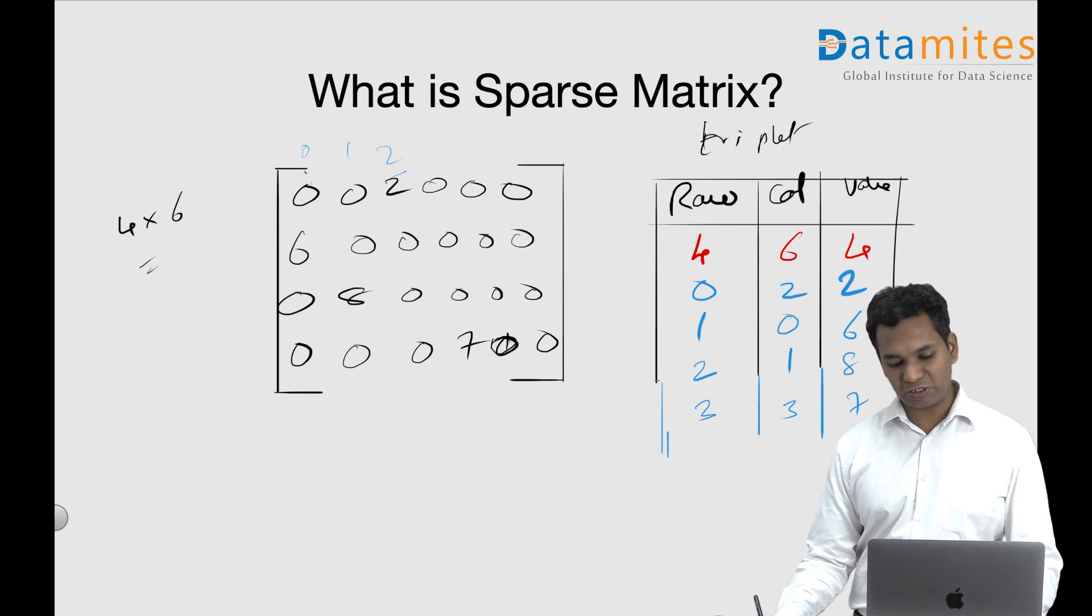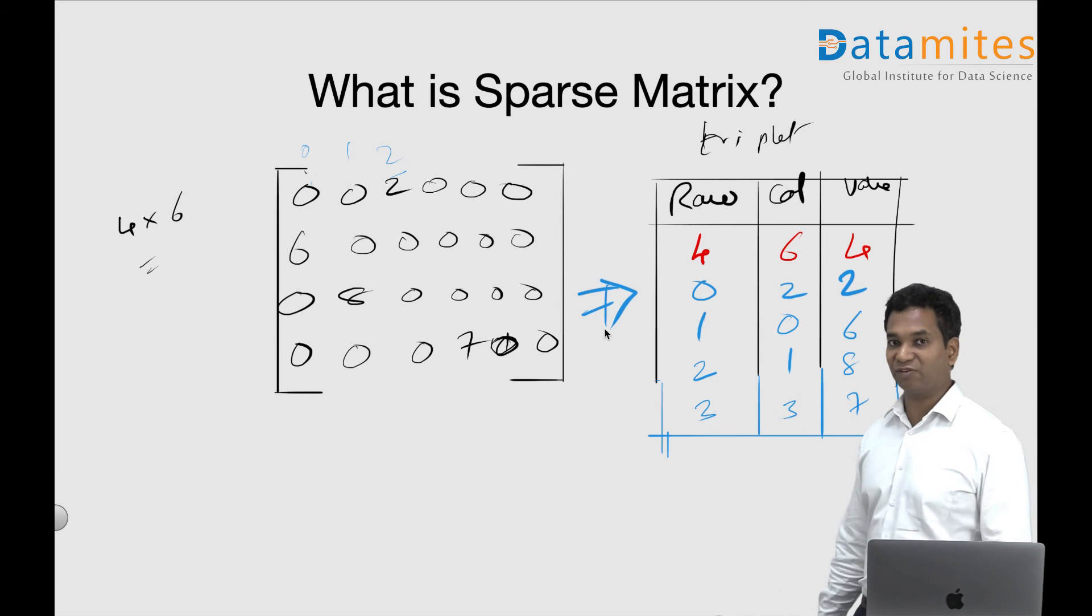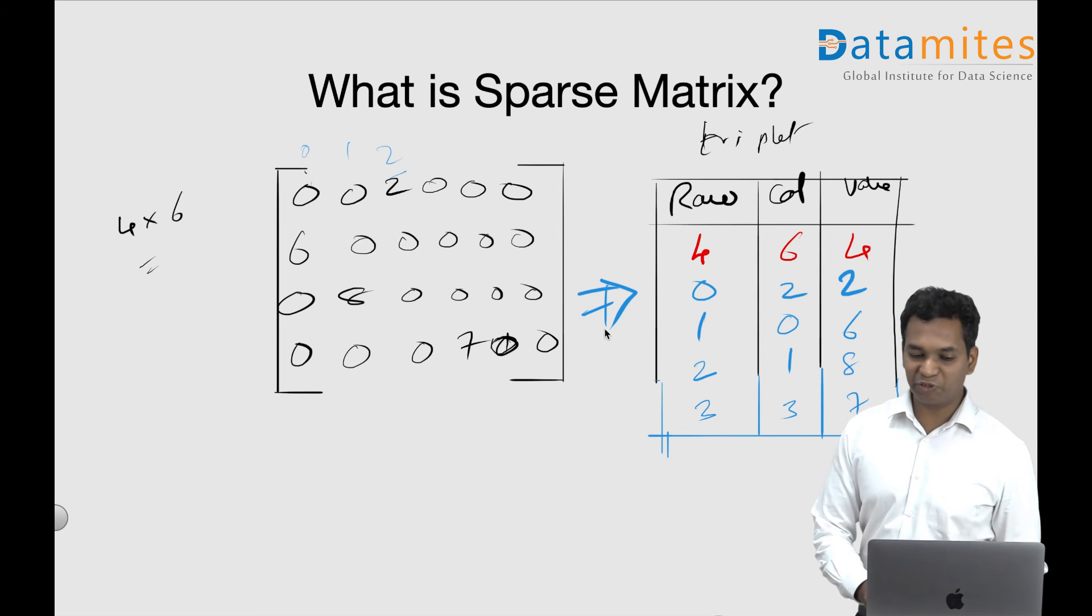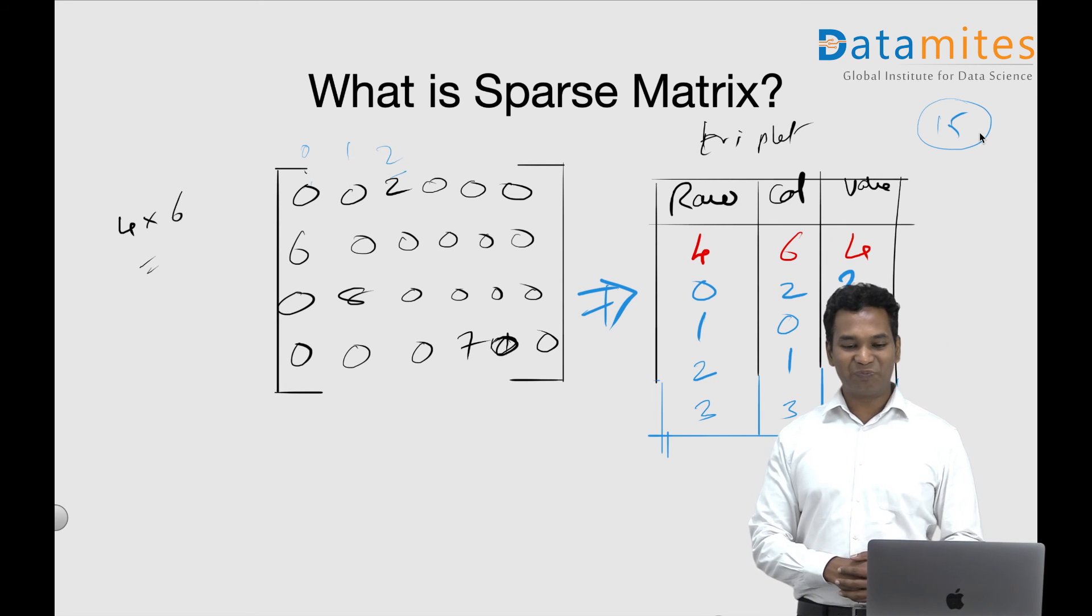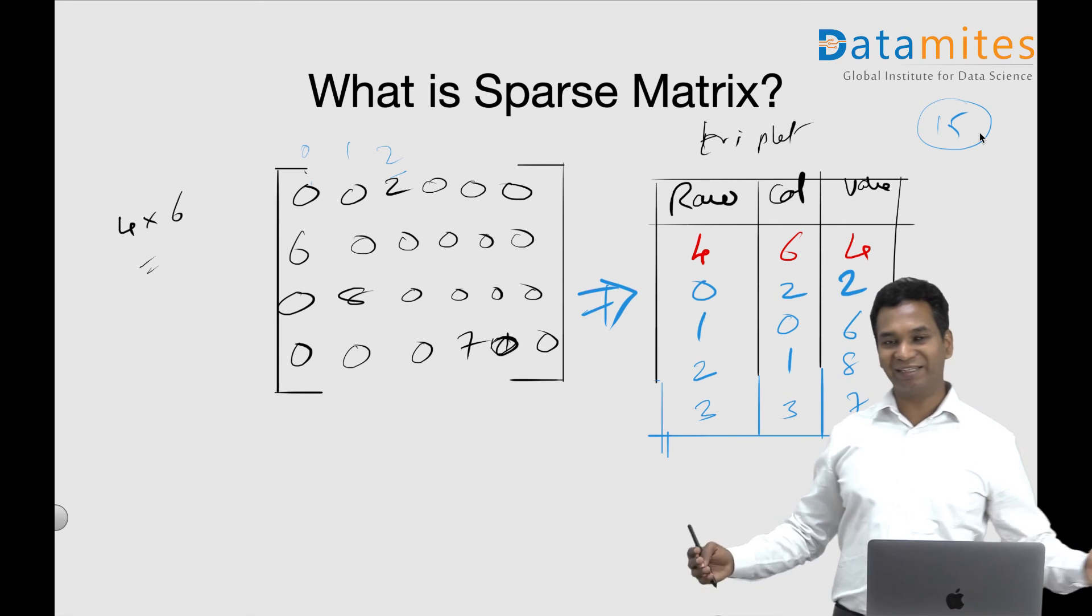So this matrix, this first matrix, can be represented by this and this is far fewer numbers. Right, you may not appreciate this because you can look at this 5 into 3, 15 numbers, which is less than 24. But when it goes really big, let's say you have